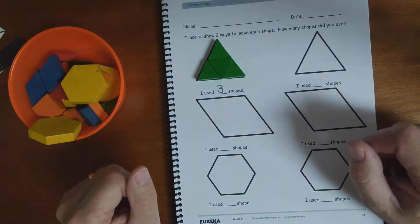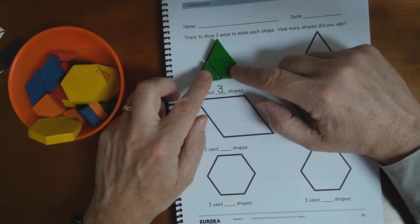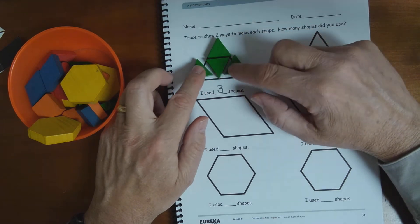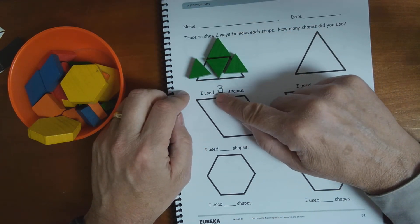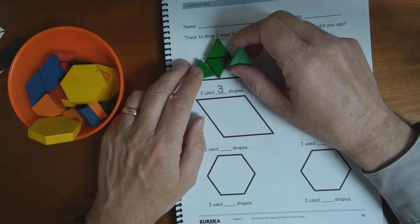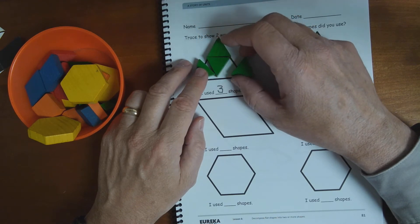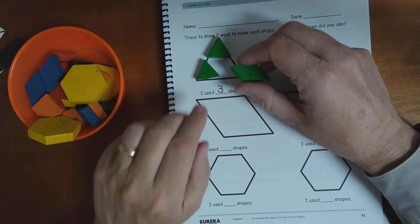Aha! That's pretty good. But do you notice a problem? How many triangles did I use? Four. And it says here they used three shapes. So I've got to get rid of this.